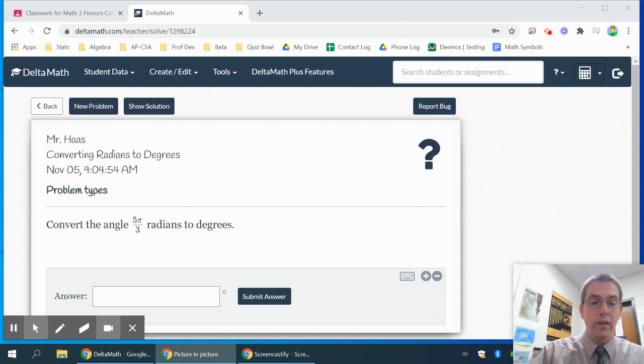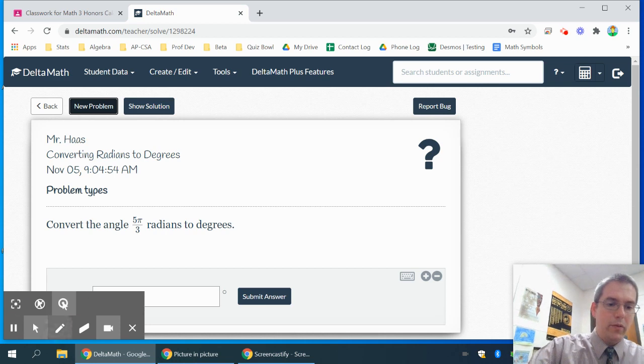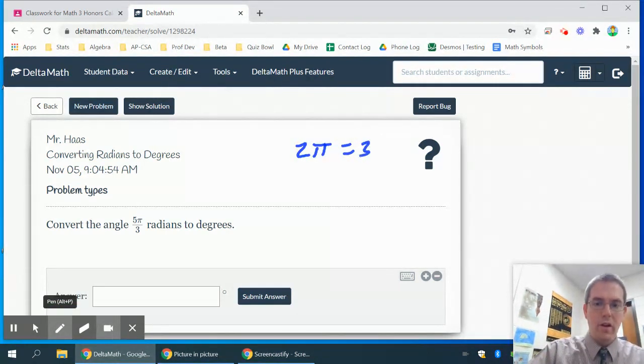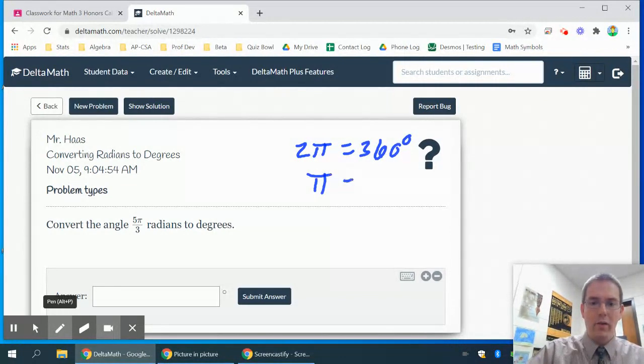Okay, so if I'm converting angles from radians to degrees, remember that all the way around the circle is 2π, or 360 degrees, or better yet, you can reduce that to say that π, halfway around the circle, is 180 degrees.